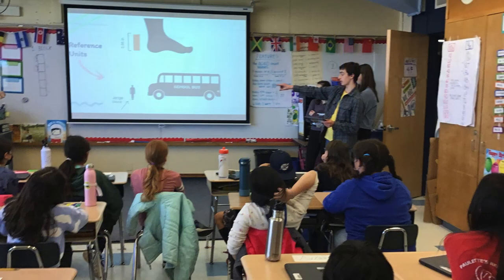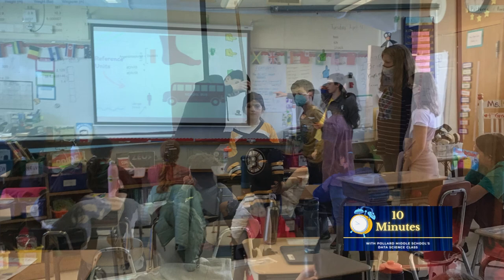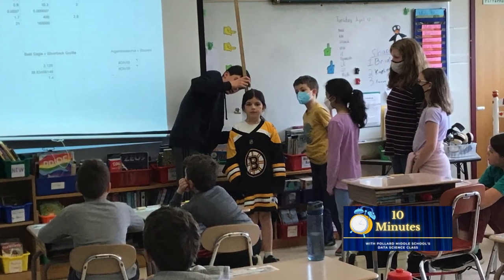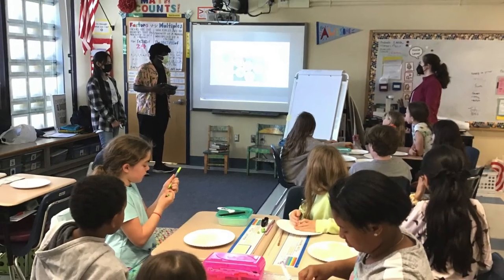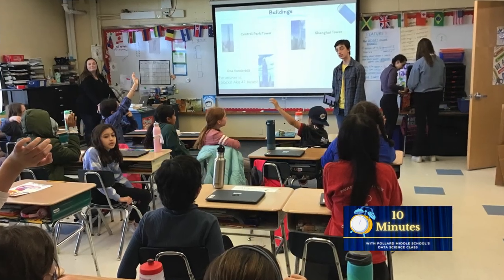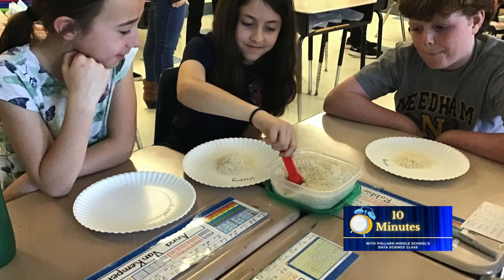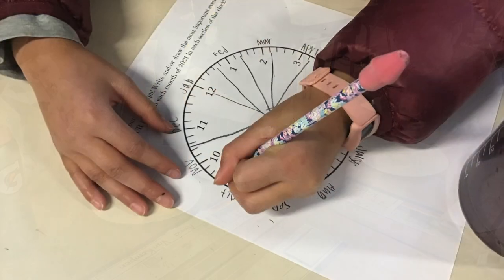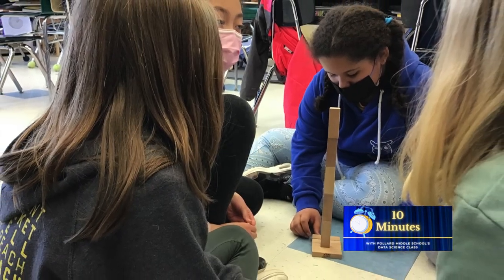Kaylin, you said you brought this over to Newman. What happened there? Newman's an elementary school — why were Pollard students there with their data science class? Our group specifically decided to create a presentation about building heights, and we went to fourth grade. We decided to represent it using something they were more familiar with — like school buses and themselves — showing how many of each it would take stacked on top of each other. We had a Kahoot and Jenga blocks for them to stack up, proportionate to the actual building, so they had a physical model to represent the actual size of these buildings.